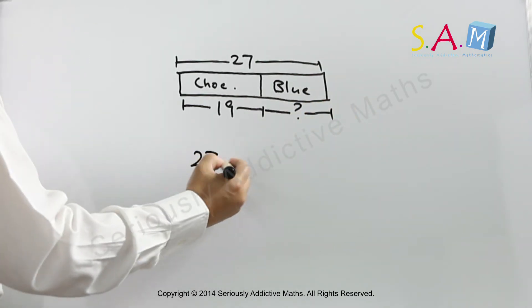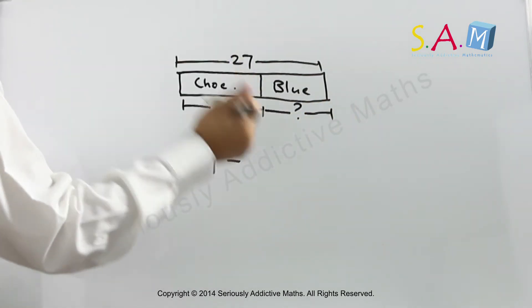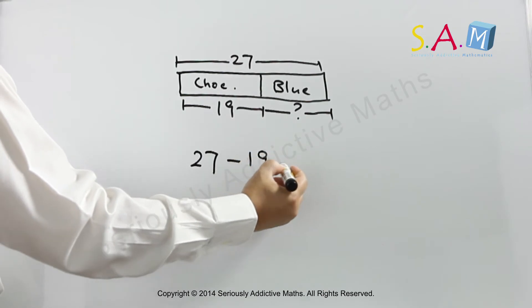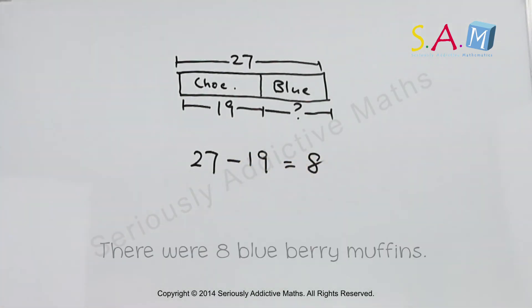So the whole take away the part will give you the answer: eight. So she baked eight blueberry muffins.